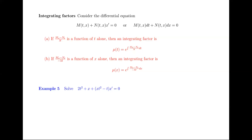Similarly, if the partial of m with respect to x minus the partial of n with respect to t, divided by negative m, is a function of x alone, then our integrating factor will be e raised to the integral of that term with respect to x. If we multiply everything by that integrating factor, then our new equation will be an exact equation.